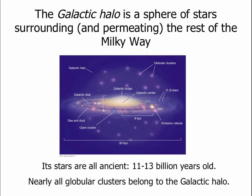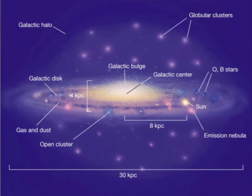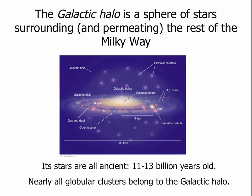The last part of our galaxy is called the halo. The halo is a more or less spherical system of stars and globular clusters that surrounds and permeates the entire Milky Way — you can think of us as a Frisbee embedded in a swarm of stars and clusters. All the stars in the halo are ancient, among the oldest stars that we know of, between 11 and 13 billion years old. Most globular clusters belong to the halo of the galaxy.